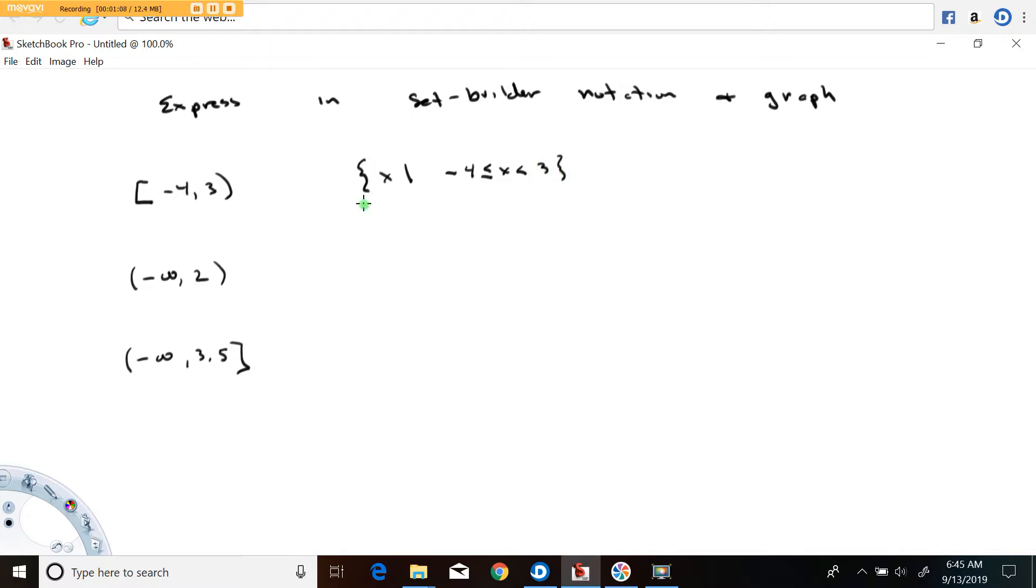So again that's how this reads. These parentheses, this reads the set of all x such that negative 4 is less than or equal to x is strictly less than 3. That's the set builder notation to describe that set of numbers.